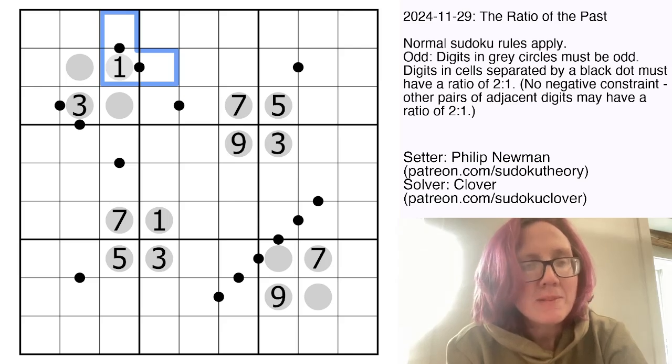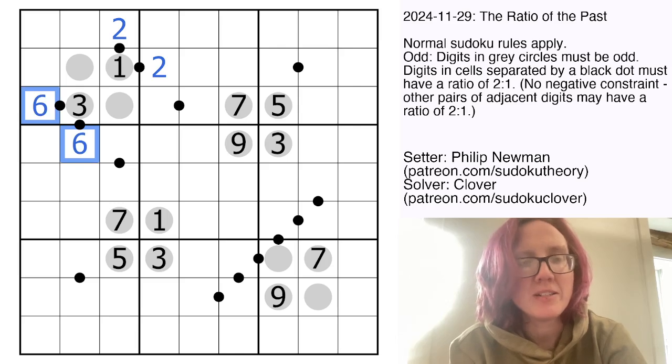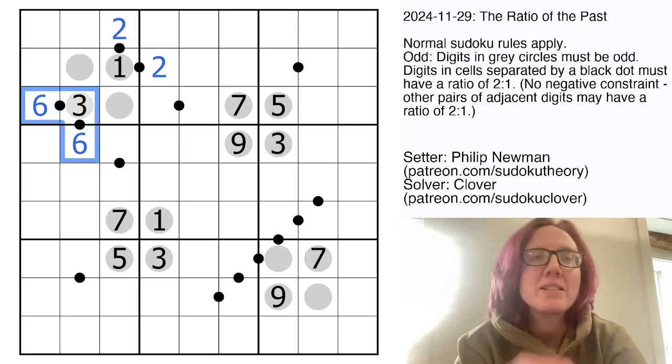So let's have a look. We have a 1 on a black dot already. So the only number in a 1 to 2 ratio with 1 is 2. And we have a 3 on a black dot here. So the only number in a 1 to 2 ratio with 3 is 6.